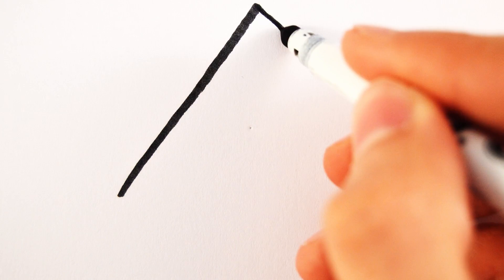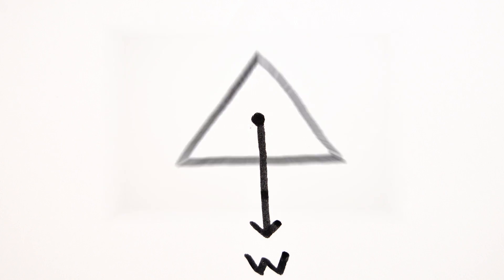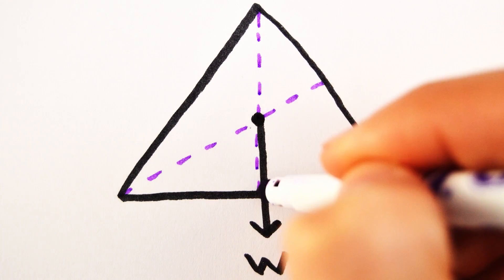The center of mass of an object is the point where the entire weight of the object appears to act. Working out the center of mass of a symmetrical object is easy, it's simply where the lines of symmetry cross.